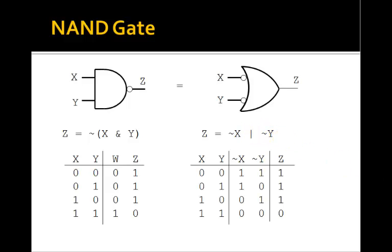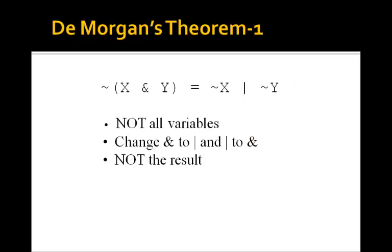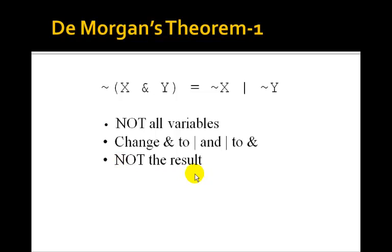This is an example of De Morgan's theorem, and it's easy to remember. If you start with the NAND gate side — NOT(X AND Y) — you first NOT all the variables: X becomes NOT X, Y becomes NOT Y. You then change ANDs to ORs and ORs to ANDs, so this AND becomes an OR. Then you NOT the result, but NOT NOT is just nothing — it goes away. So you end up with NOT X OR NOT Y.